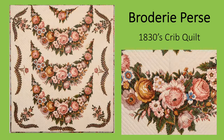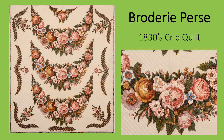Quilters would often cut out specific images and stitch them to a background — a technique called broderie perse. This is an example of an 1830s broderie perse crib quilt. The swags of blooms were cut from a chintz fabric and sewn on top of the off-white background, as were the leaves and bouquets around the edges. The chintzes could be very expensive, so using them in this way was often a way to reduce expense — the images could be spread out on the background so less yardage was needed.